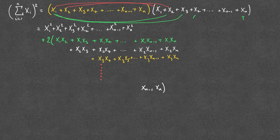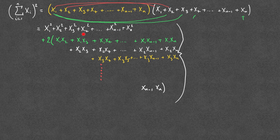So how do we write this out in summation notation? The top line is really simple, because this is just the sum of x squared. So this is going to be equal to the sum from i equals 1 to n of xi squared.